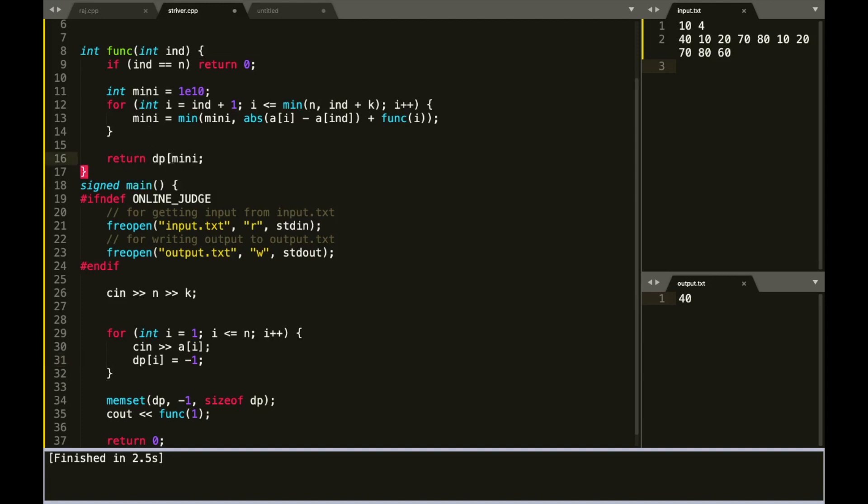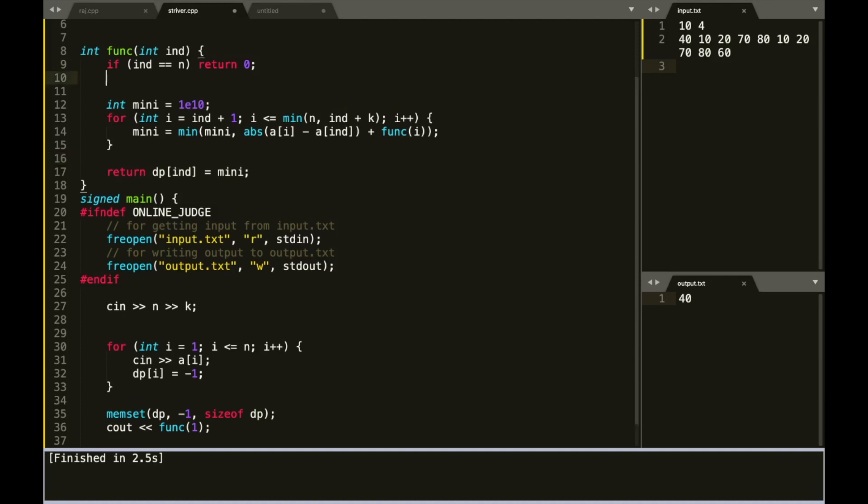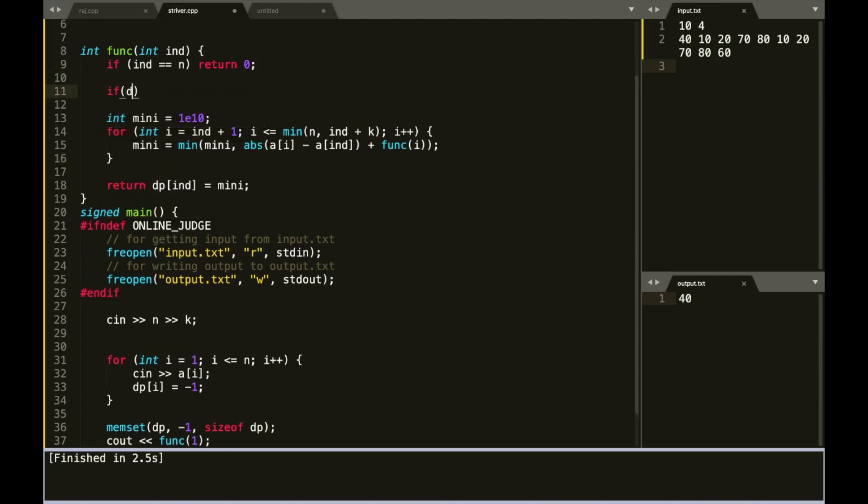What you need to do is you've got to memoize so that if there are any subproblems where this is required, you can easily take it up. And whenever a new function call comes, you've got to simply check if that value has previously occurred or not.